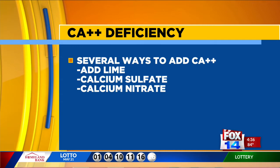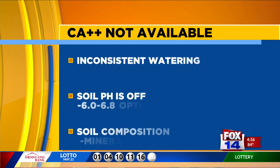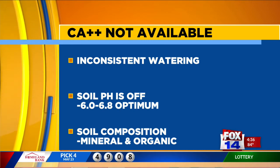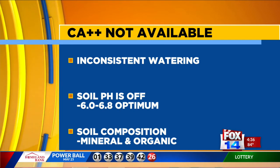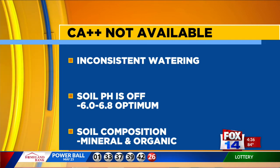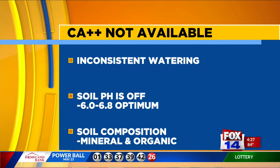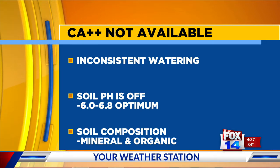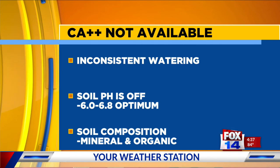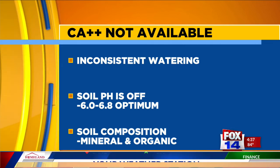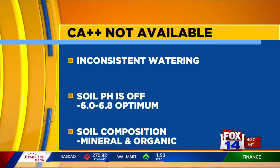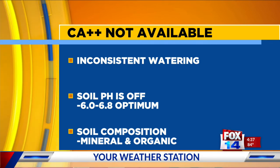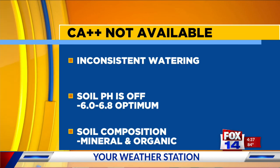If calcium is present per the soil test results but simply not available, this could be due to several factors, namely inconsistent watering. The soil pH may be off — calcium is available to plants across a broad pH range, but tomatoes generally prefer acidic soils. In our area, a pH of 6.0 to 6.8 is optimum. Soil composition is also a factor — gardeners need to remember that soil needs both mineral and organic components for a nice loamy soil.